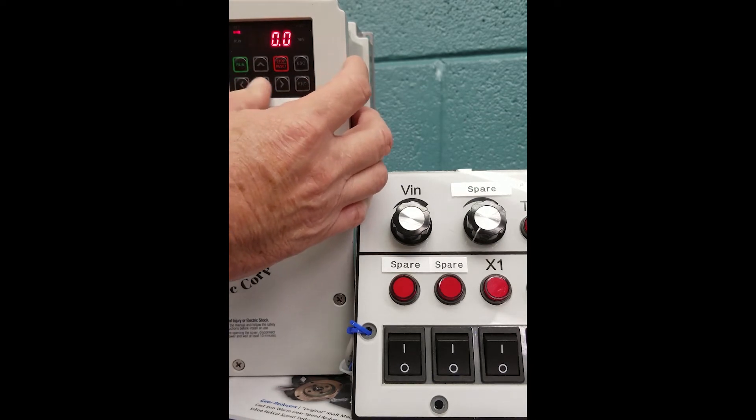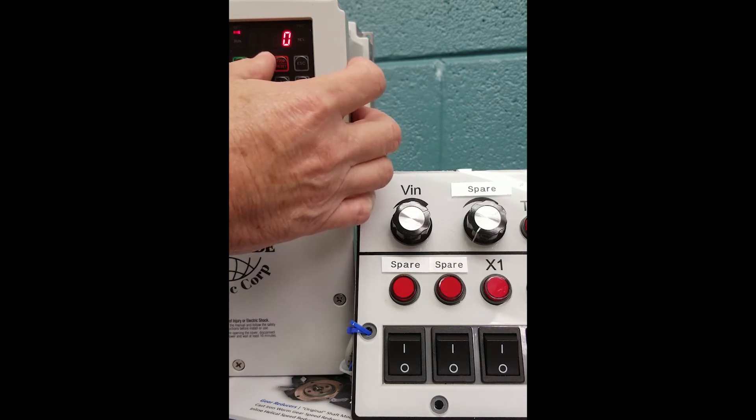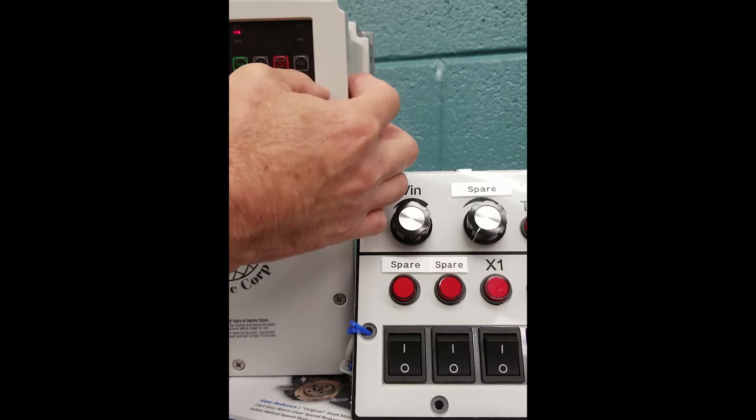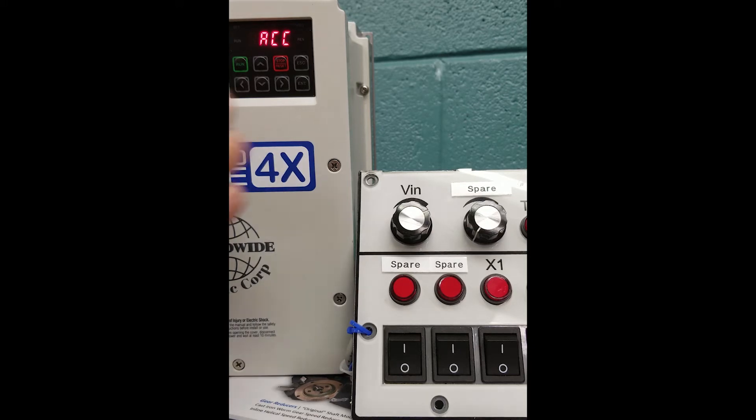So we'll use our arrow keys to change the 2 to a 0, arrow back over, and change the 0 to 5. Remember, on this VFD we must hit enter twice to store the parameter or the setting that we want.